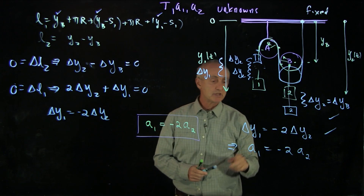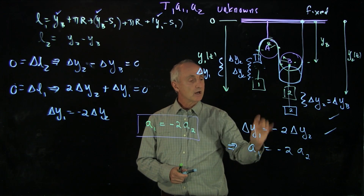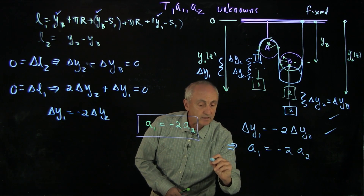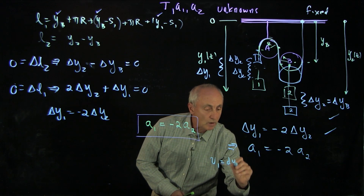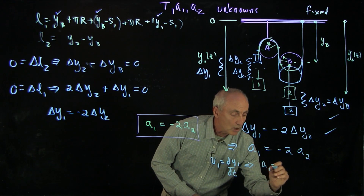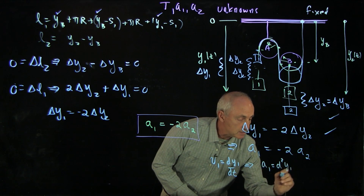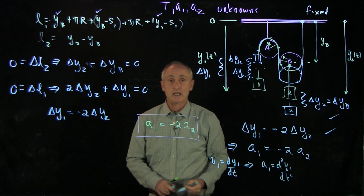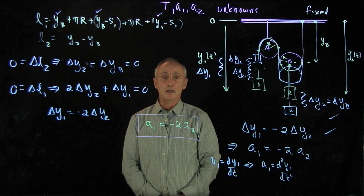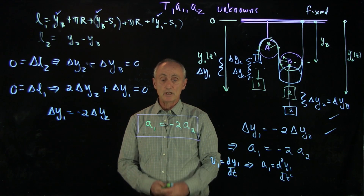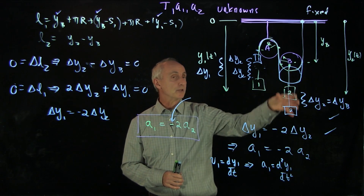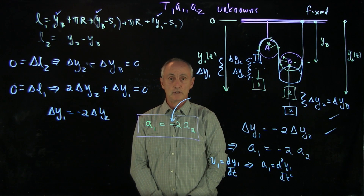And again, if you take two derivatives — recall that the velocity is dy1/dt and the acceleration a1 is d²y1/dt² — then the same proportionality is maintained under the two derivatives. That's another way of thinking about how to get the relationship between accelerations. But you have to be extremely careful about that sign, because as object 2 goes in the positive direction, object 1 will go in the negative direction.